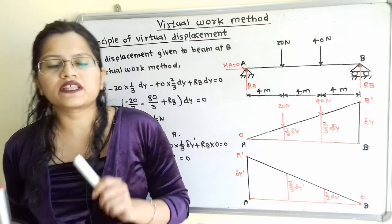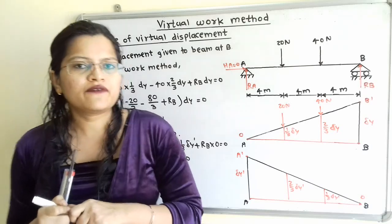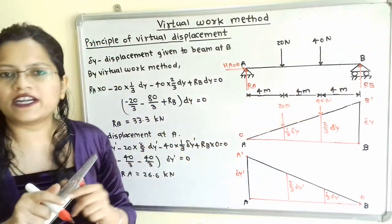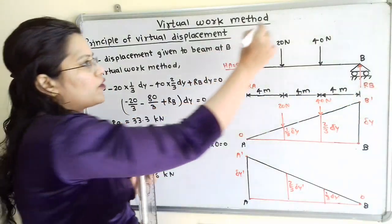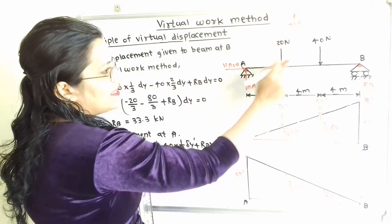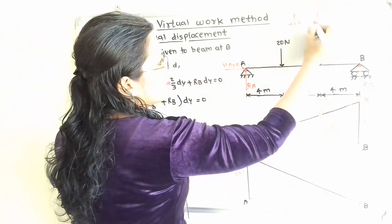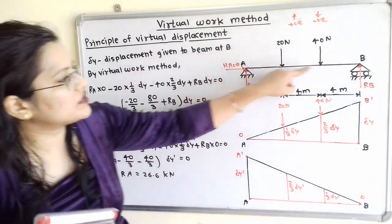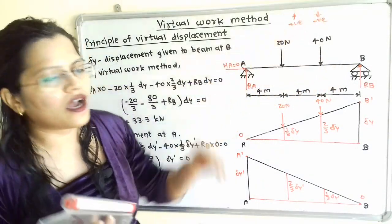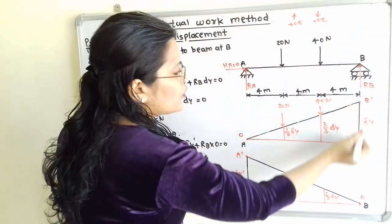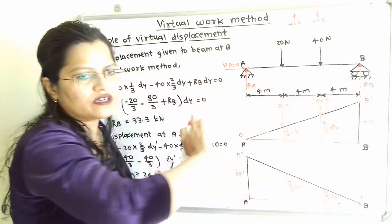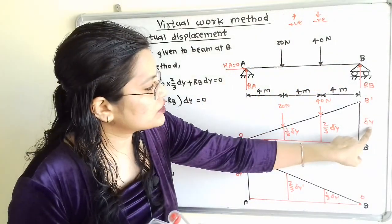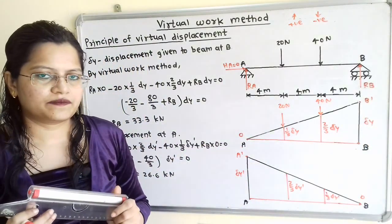When applying the virtual work method, sign convention is important. If the direction of force is upward — such as RA and RB — we use a positive sign. If the direction of force is downward, we use a negative sign. Similarly for displacement: when displacement is in the upward direction from the original beam position, we use a positive sign. Both delta Y and delta Y dash represent upward displacements, so we take positive signs for both.